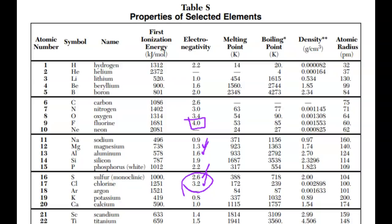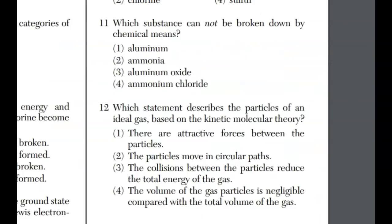For question 11, which substance cannot be broken down by chemical means? This is the definition for an element. Hopefully you realize right away, aluminum, Al, is an element. You can go to reference table S and cross-check. Number one is your answer.